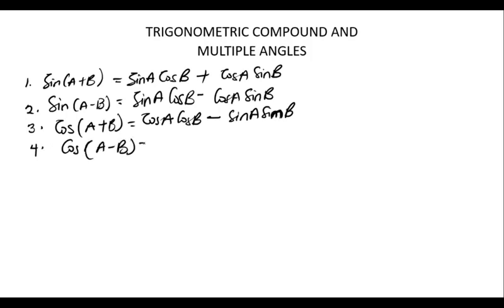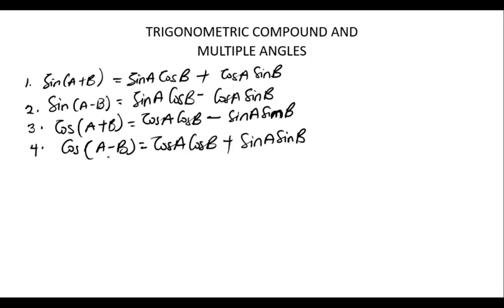When we have cos(A − B), the expansion is: cos A cos B plus sin A sin B. So we have plus in between the expansion instead of minus. Note how the sign flips compared to cos(A + B).